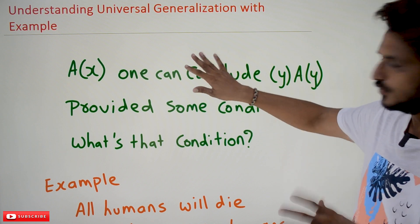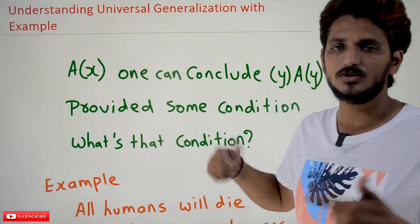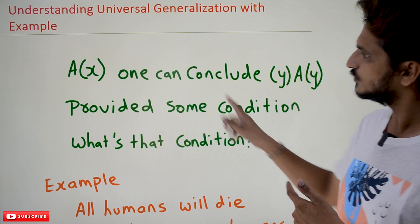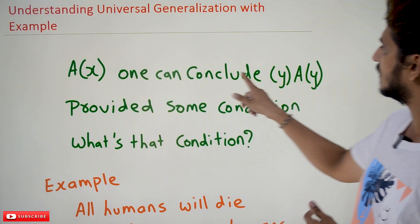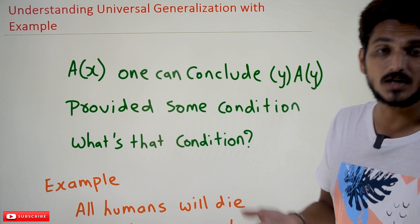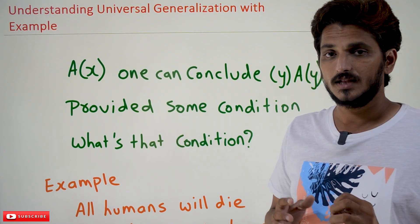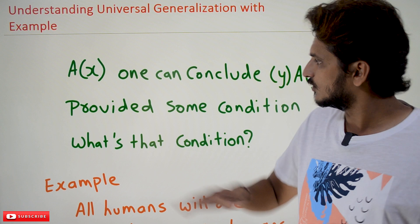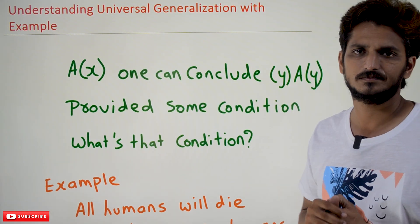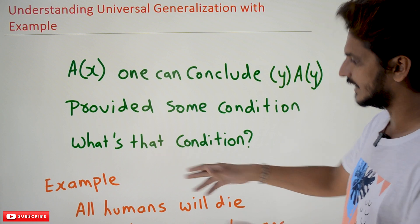Yes, we can do this in some situations. What's that situation? Provided some conditions — in those conditions we can say that from A(x), one can conclude for all y, A(y). We will first understand those conditions with examples, and then at the end we will give the definition of universal generalization.